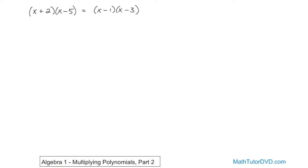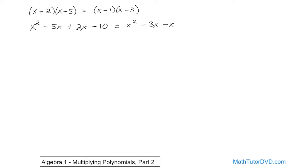So this equation requires you to multiply the binomials first. On the left: x times x gives x squared, x times negative 5 gives negative 5x, 2 times x gives 2x, and 2 times negative 5 gives negative 10. On the right: x times x gives x squared, x times negative 3 gives negative 3x, negative 1 times x gives negative x, and negative 1 times negative 3 gives positive 3.